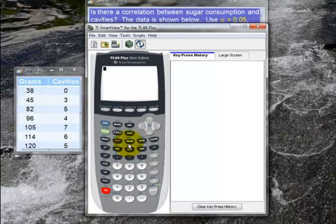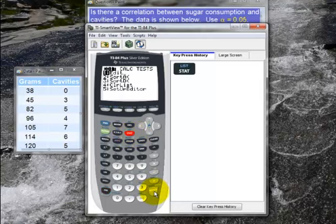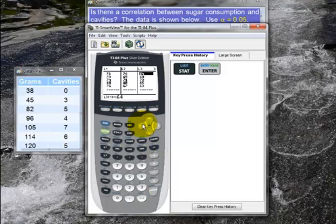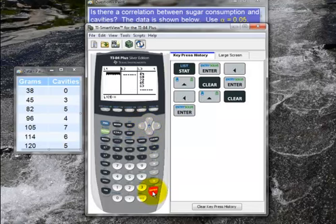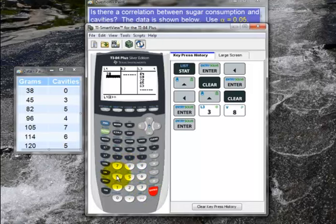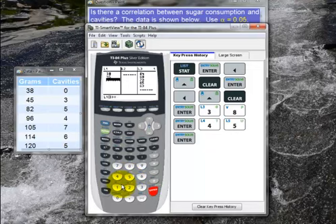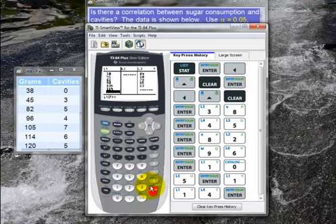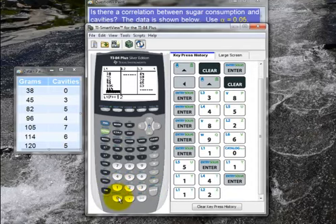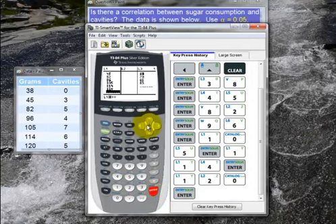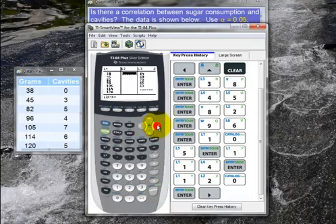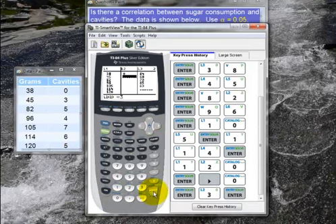Here is the calculator. I want to enter the data for grams and cavities. Go to STAT and then EDIT. Let's clear out L1 and L2. For L1, I will put the grams data in, that is 38 and 45, etc. For L2, I will put in the cavities data, that is 0 and 3, etc.